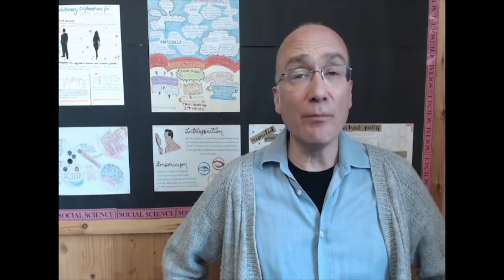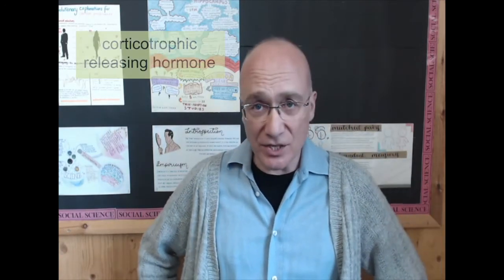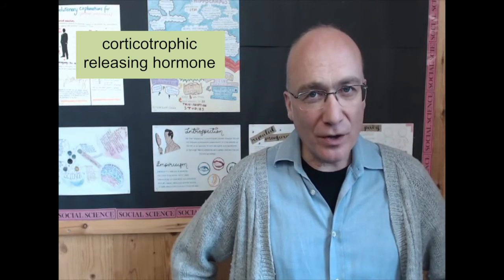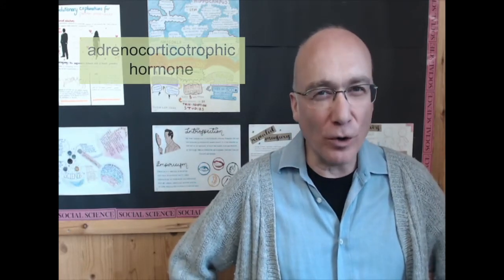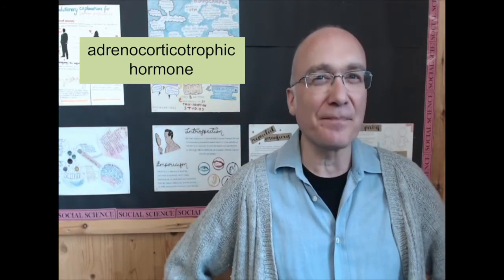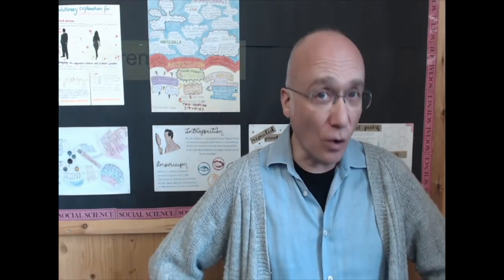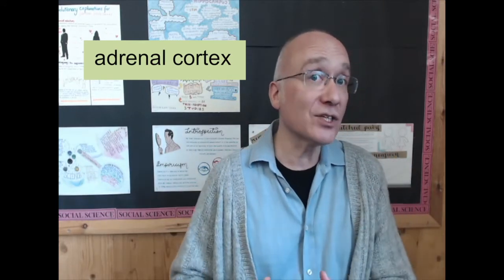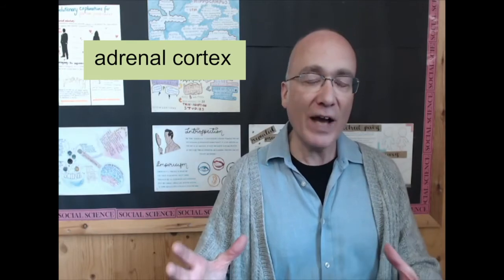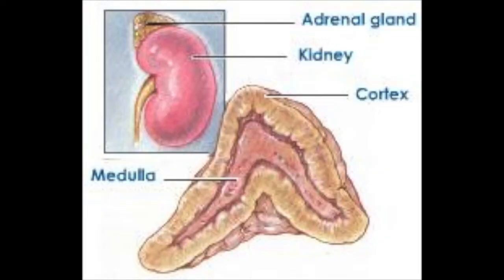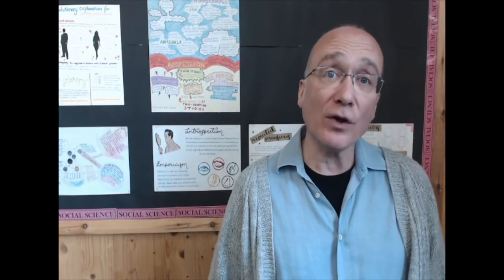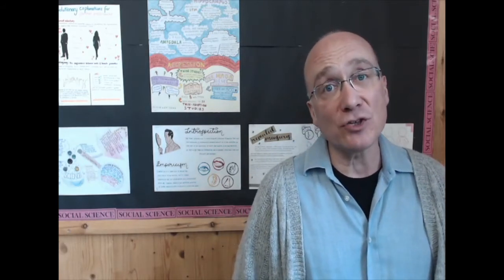The amygdala stimulates the hypothalamus, which releases corticotrophic releasing hormone. This hormone stimulates the anterior lobe of the pituitary gland to release adrenocorticotrophic hormone into the bloodstream. The adrenocorticotrophic hormone then travels through the bloodstream to the adrenal cortex — the surface of the adrenal gland.